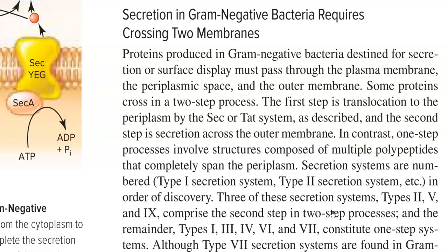Whereas all the other remaining secretion systems — that is, type 1, type 3, type 4, type 6, and type 7 — constitute only a single-step process for secretion.